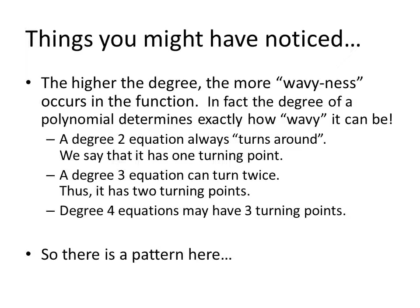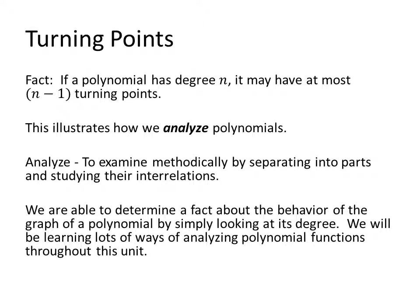You'll notice there's a pattern here. We can summarize what we just saw in this fact: if a polynomial has degree n, it may have at most n minus 1 turning points. That is, the degree of a polynomial will limit the amount of waviness it has. A degree 5 polynomial does not have to have 4 turning points, but it can have at most 4 turning points.